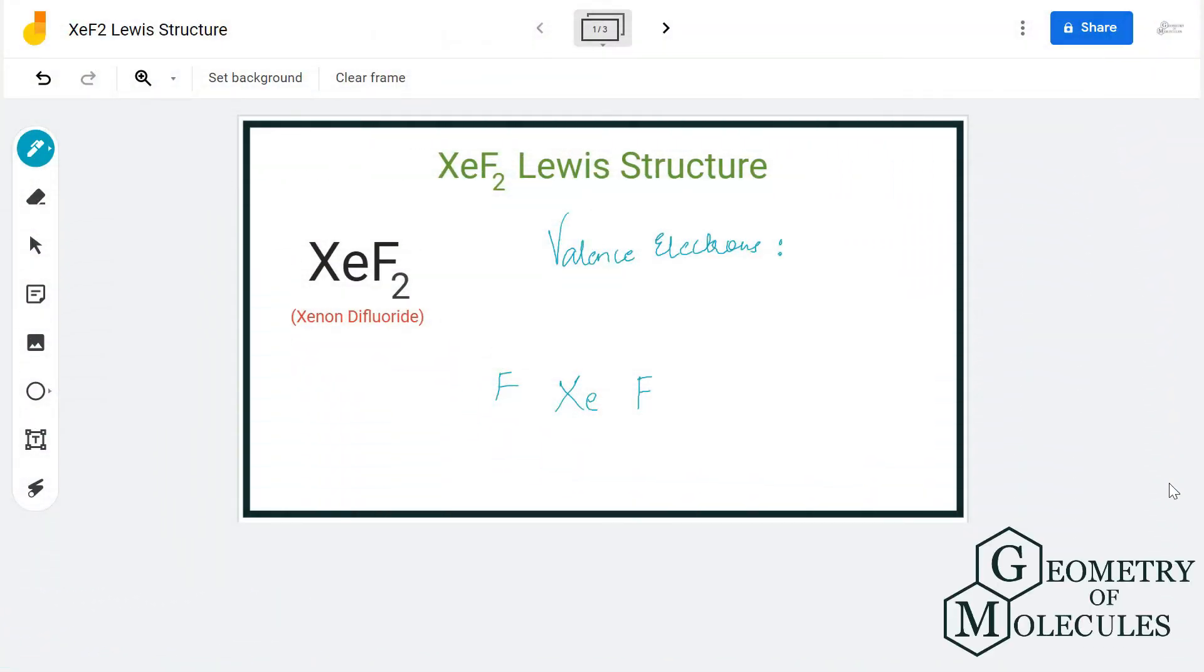Hi guys, today in this video we are going to look at the Lewis dot structure for XeF₂, the chemical formula for xenon difluoride. It is made up of one xenon atom and two fluorine atoms. To understand the Lewis structure of this molecule, we shall first look at the total number of valence electrons for XeF₂.